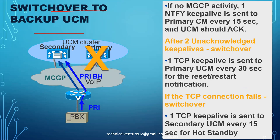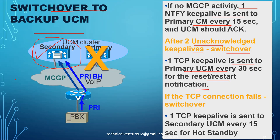For switchover: one NOTIFY keep-alive message is sent to the primary CUCM every 15 seconds. If the primary CUCM is up, the gateway still sends keep-alive messages. If it doesn't get a response after two unacknowledged messages, it switches over to the secondary CUCM. One TCP keep-alive is sent to the primary CUCM every 30 seconds for restart notification. If the secondary is up, the gateway still sends keep-alive messages to the primary to check if it recovers — if so, it switches back.